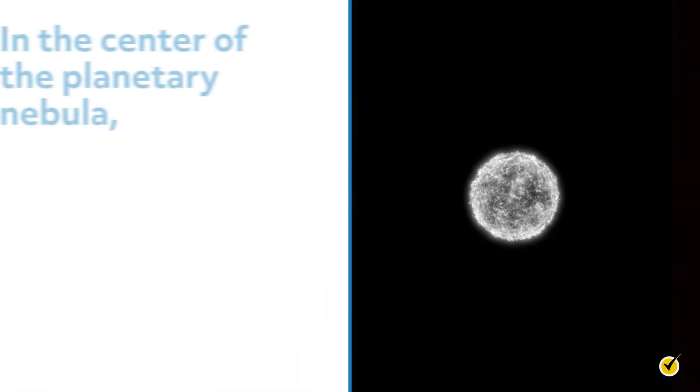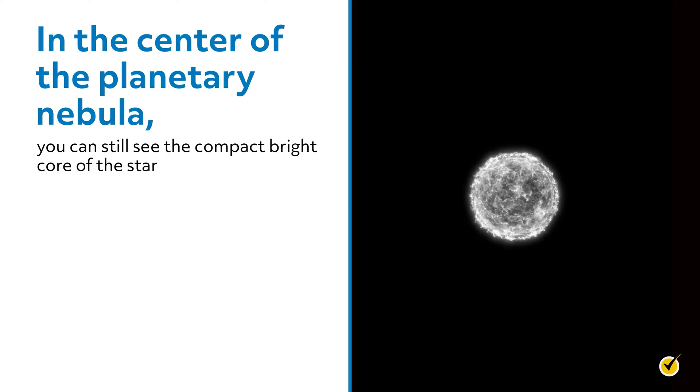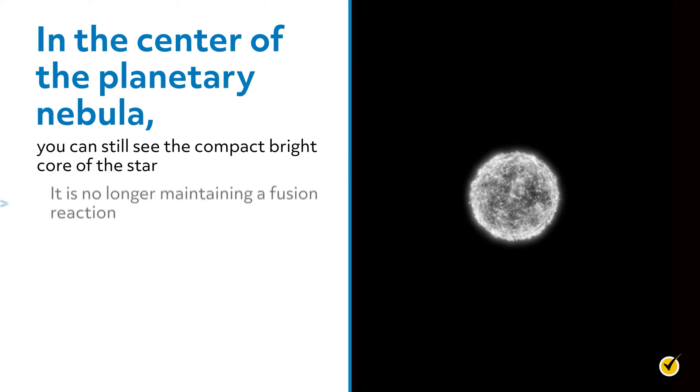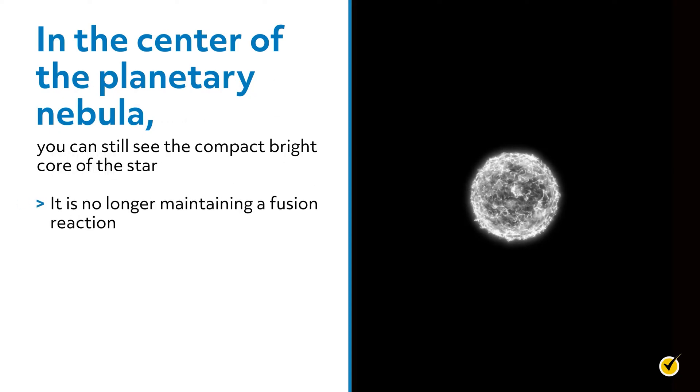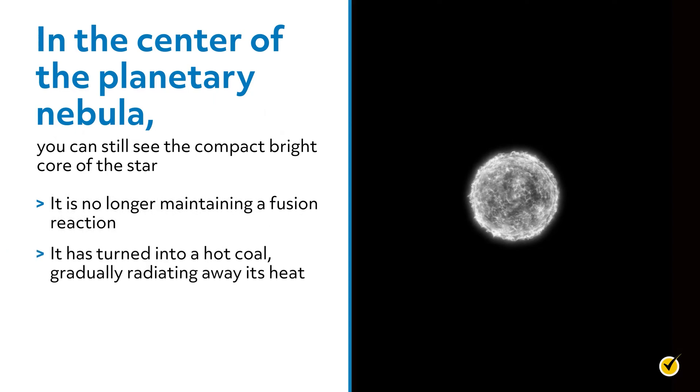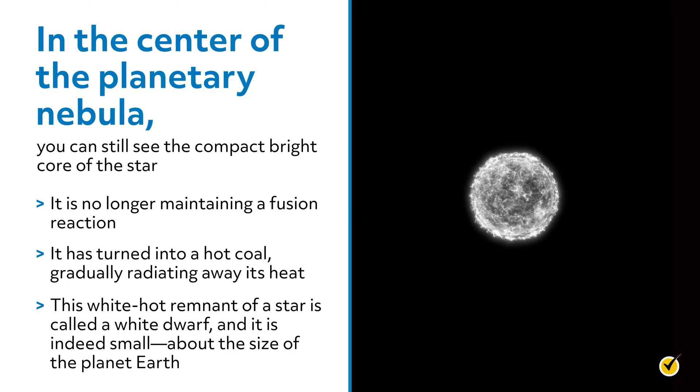In the center of the planetary nebula, you can still see the compact, bright core of the star. It is no longer maintaining a fusion reaction. It's turned into a hot coal, gradually radiating away its heat. This white-hot remnant of a star is called a white dwarf, and it is indeed small, about the size of the planet Earth.